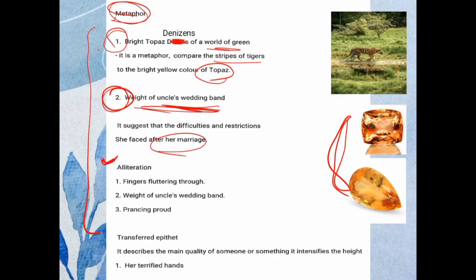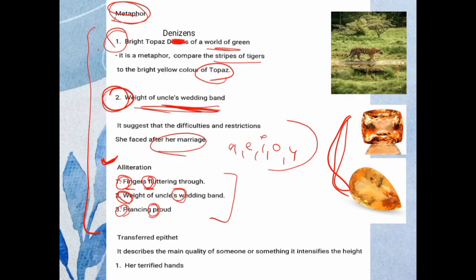Second poetic device: alliteration — repetition of consonant sounds. Examples: 'fingers fluttering' (F and F), 'weight of uncle's wedding band' (W and W), 'prancing proud' (P and P). Consonants are all alphabets except the vowels A, E, I, O, U. So alliteration involves repetition of consonant sounds.